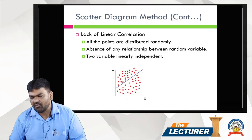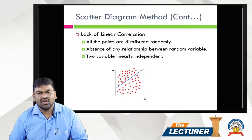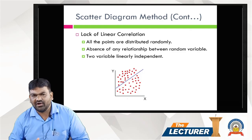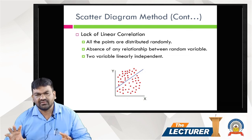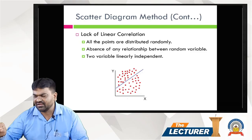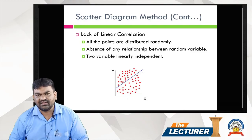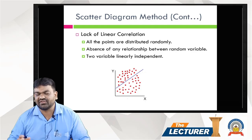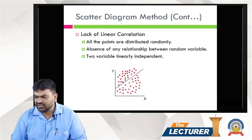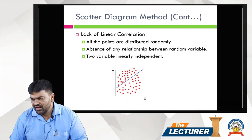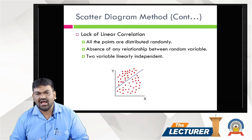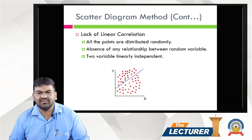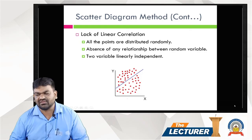The last type is Lack of Correlation. All the points are distributed randomly, showing an absence of any relation between the random variable and the linear variable — the variables are independent. The value of the correlation coefficient is 0.